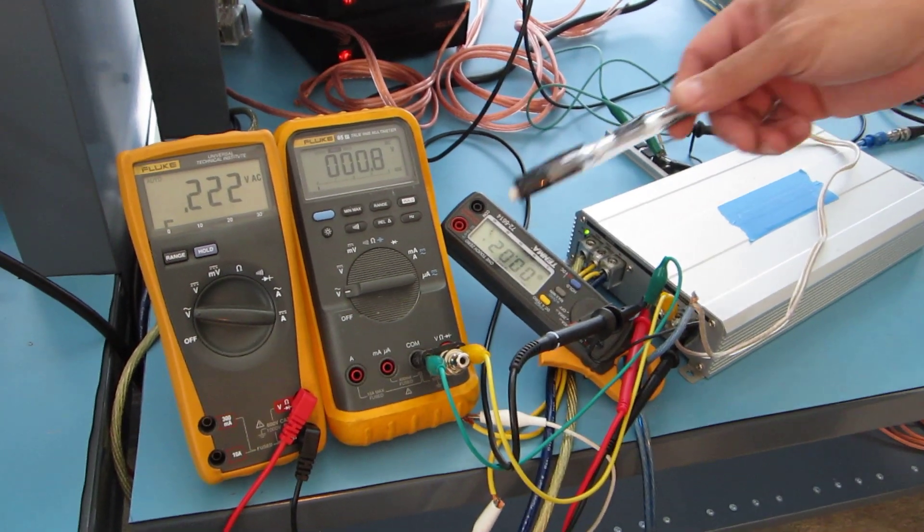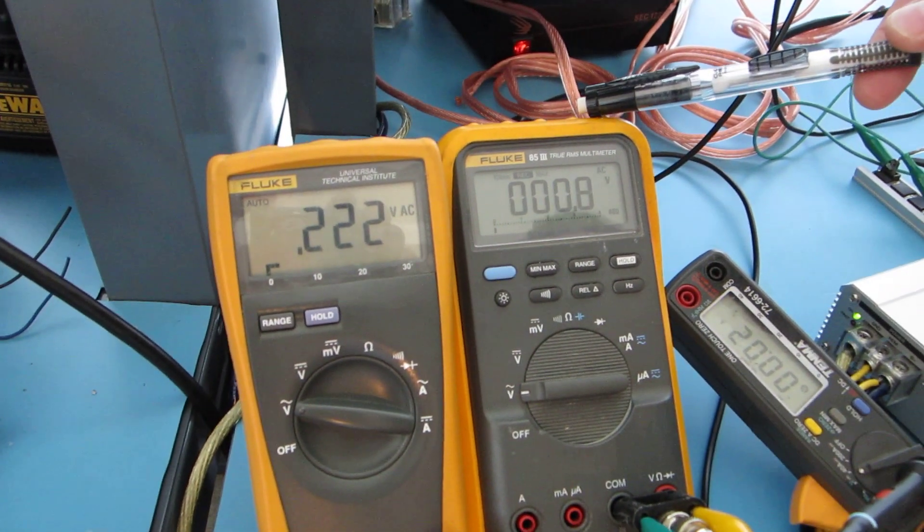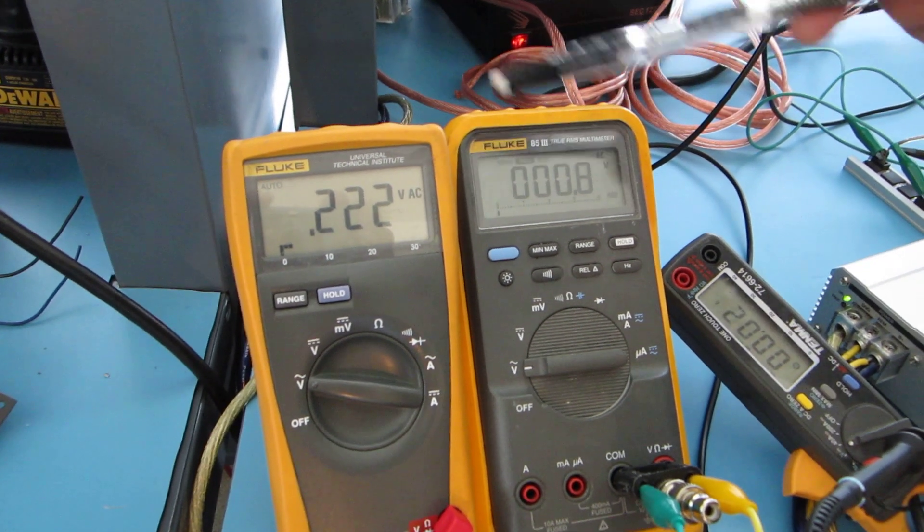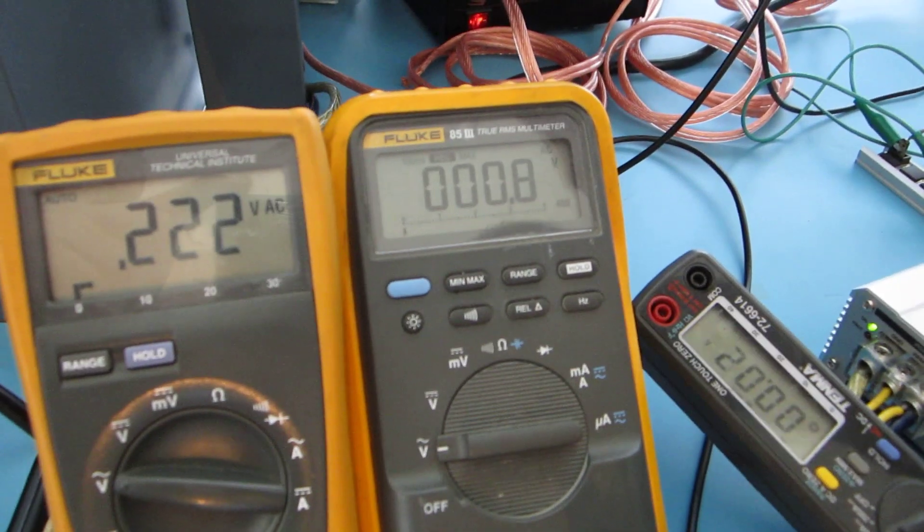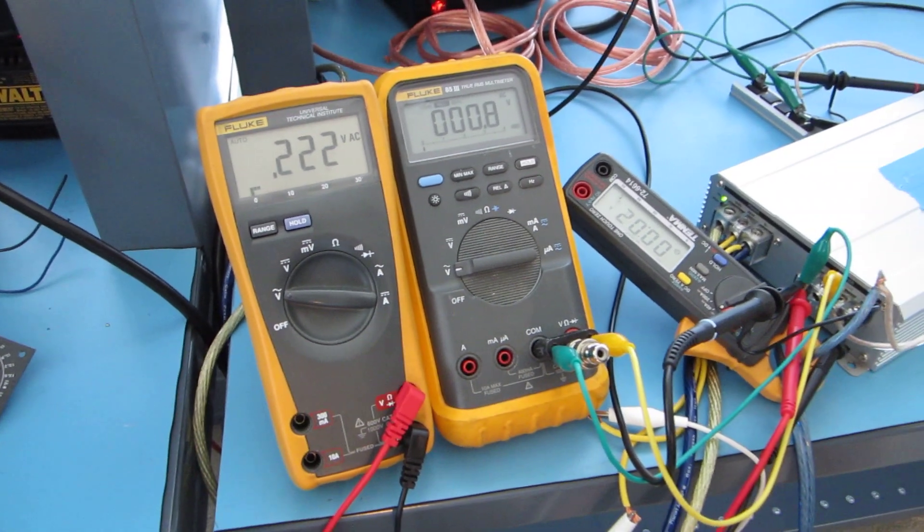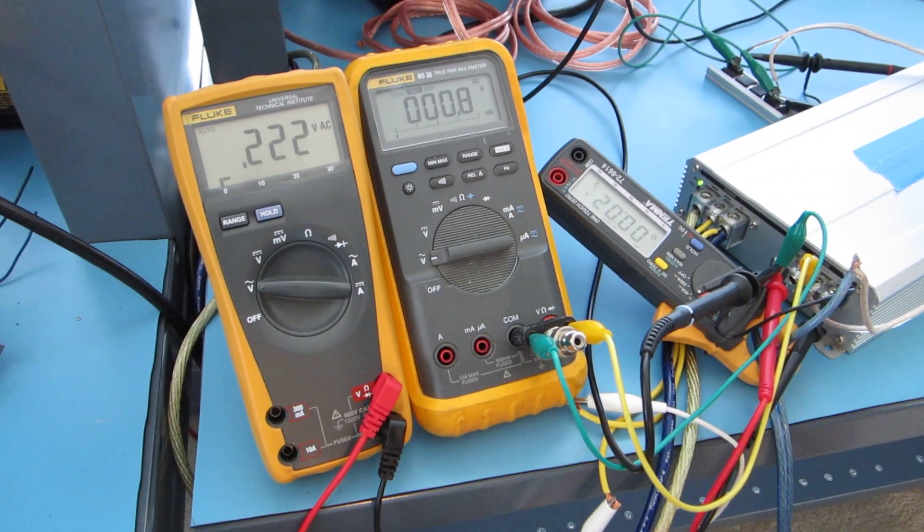So current clamp here on the speaker wire, voltmeter on the voltage coming out of the amplifier to the speaker, same here. These are hooked up to the same exact thing. It's just that this is a true RMS multimeter and this is not and there's going to be a difference. That's another problem that is introduced when you're trying to do a measure like this.